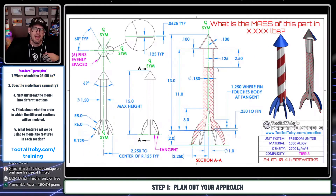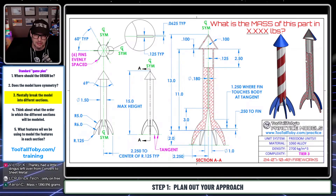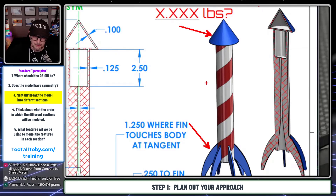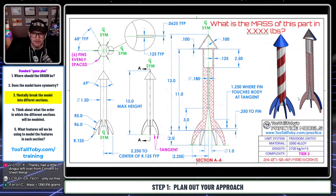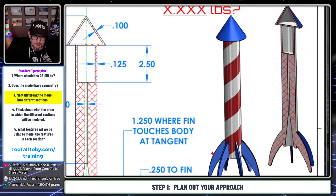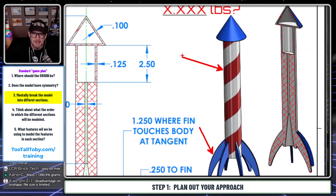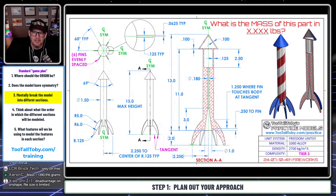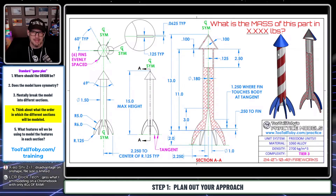Next, discretize the model — break it down into different sections and decide how to model each one. If this were for engineering purposes we'd consider individual parts, but since it's a single model we don't need to worry about that. I'd break this into three sections: the fin and fin pattern, the main body with the cone on top, and the cut extrude on the inside. Since the main cone is foundational to the fins, it makes sense to model the main cone first.